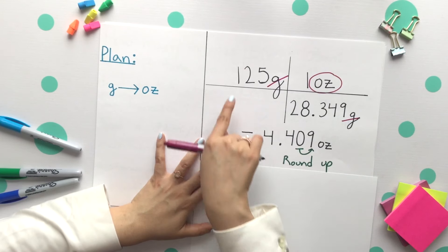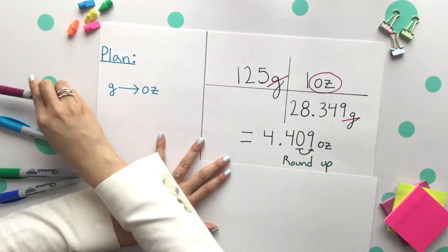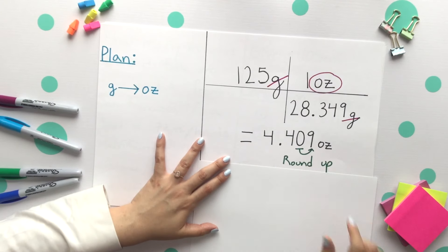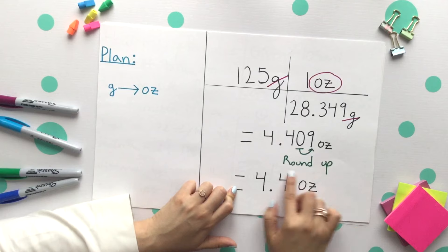However, our given was three sig figs, we need to round up. Your final answer is 4.41 ounces.